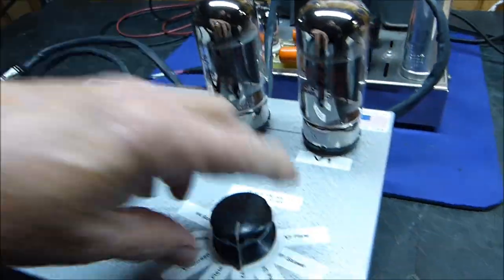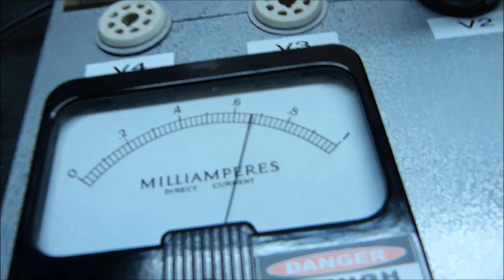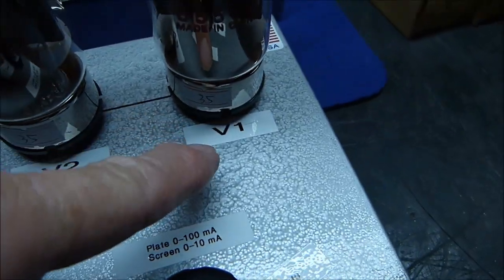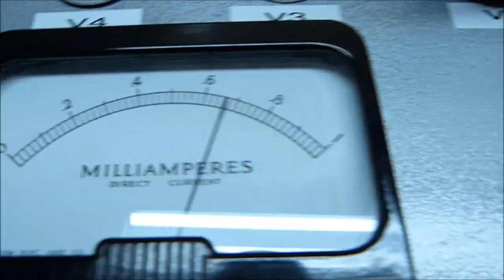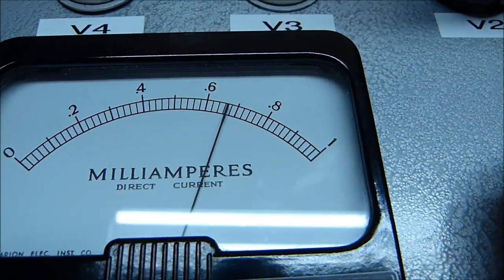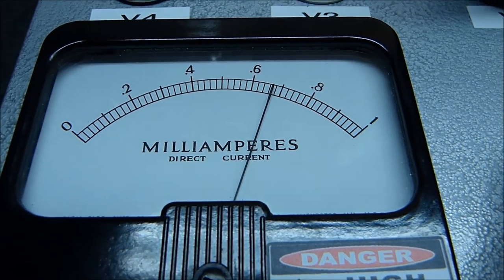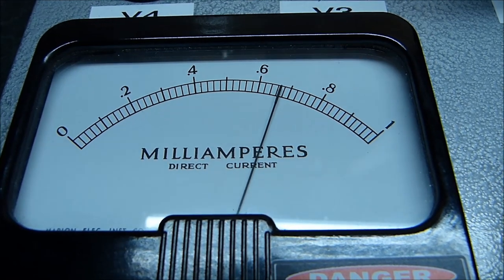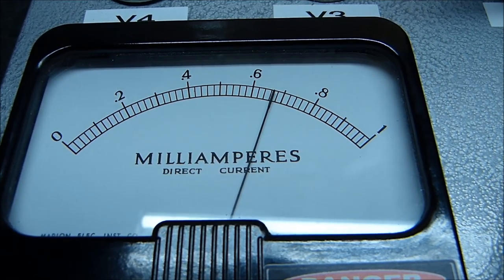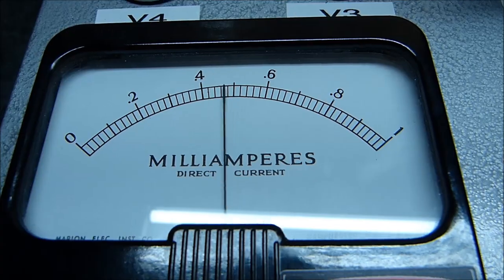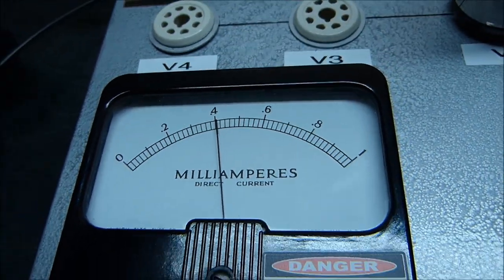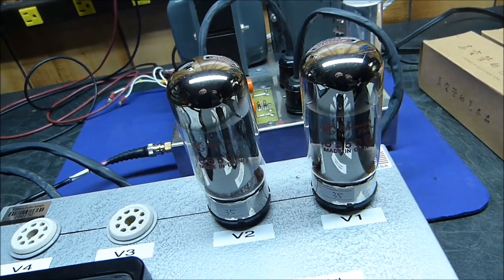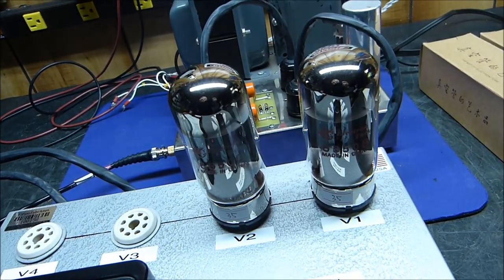But look at this - this is quite impressive. There's the plate current of V1, about 66 milliamps. There's the screen current, 4 milliamps. There's the plate current of the second tube, exactly the same - it's a hair over 66 milliamps. Screen current is 4 milliamps. Now I call that a matched pair - that is really nice. I'm very impressed.